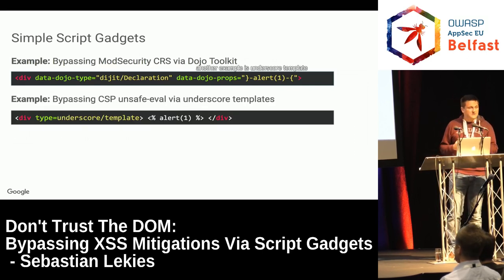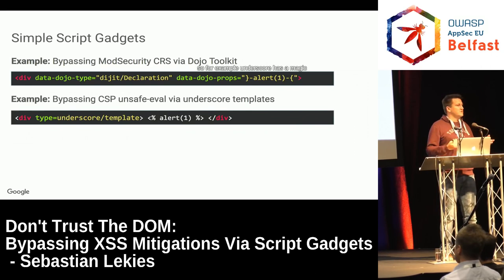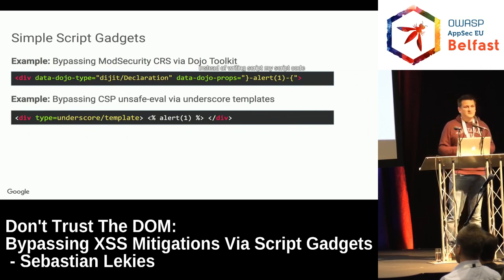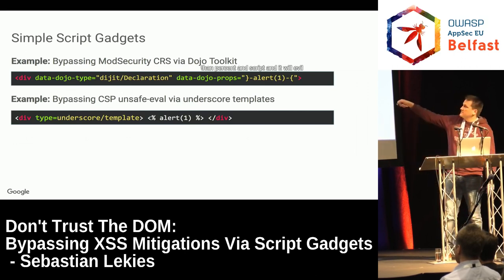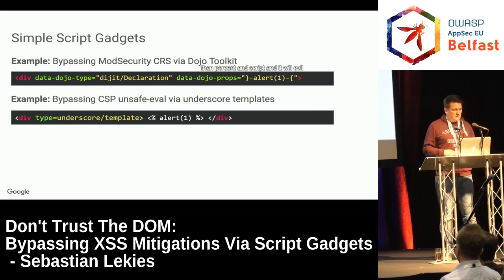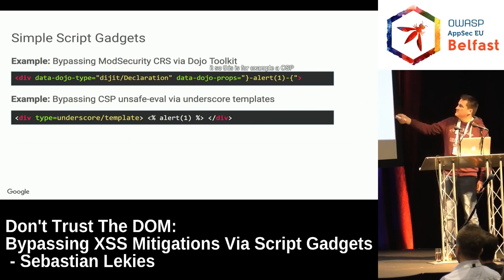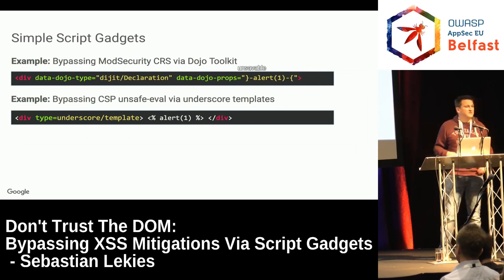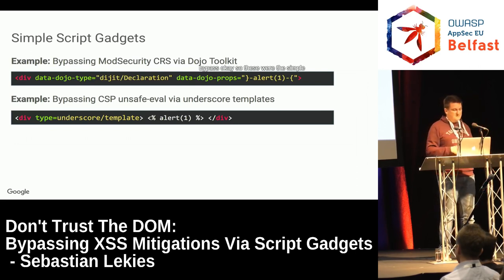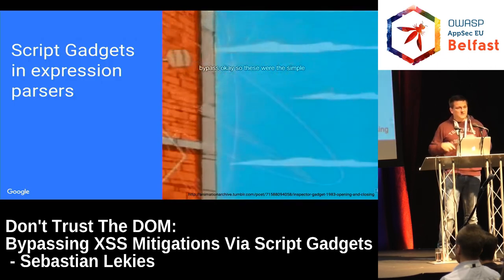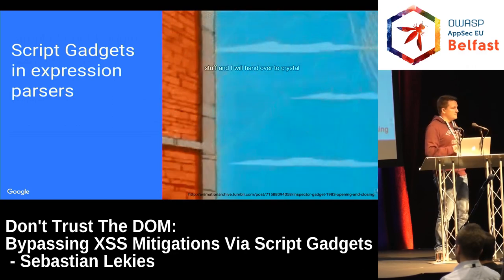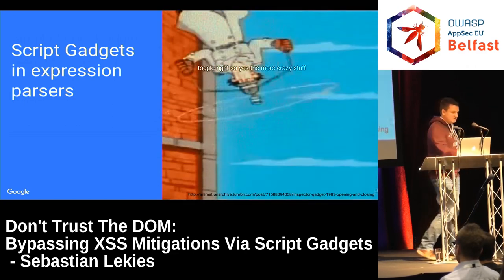Another example is Underscore templates. Underscore has a magic functionality to execute scripts: instead of writing a script tag, you write less-than percent and your script code and it will eval it. This is, for example, a CSP unsafe-eval bypass. So those were the simple gadgets, and now we have some more complex stuff. I'll hand over to Krzysztof.